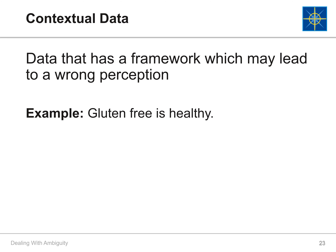Next, we have contextual data. Contextual data presents you with information which provides context to an event, person, or item, while its context to another event may not be visible. This may lead to a wrong perception. For example, gluten-free food is often considered healthy — yet gluten-free merely means there is no wheat in the food. The food could still contain unhealthy ingredients like fat and sugar. This incomplete data may lead to wrong decisions.